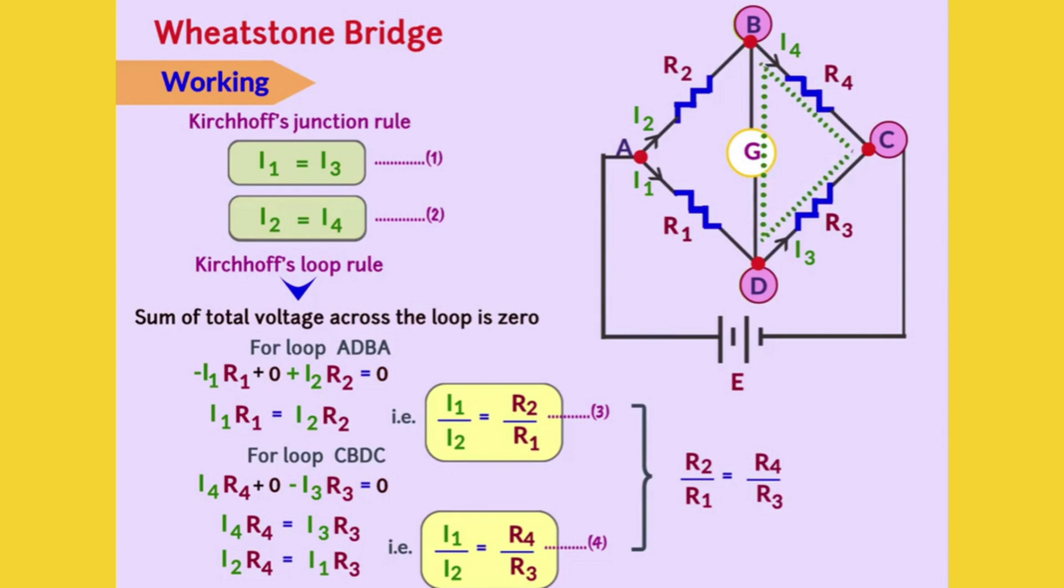So, the Wheatstone bridge in the balanced condition is used to determine the value of the unknown resistors. Applying Kirchhoff's junction rule in the circuit at junction D, the incoming current I1 equals the outgoing current I3 and there is no current flowing through the galvanometer. Similarly, at junction B, the incoming current I2 equals the outgoing current I4.